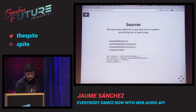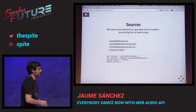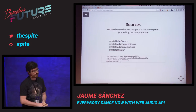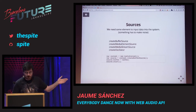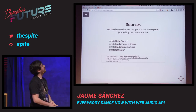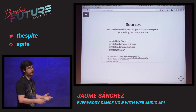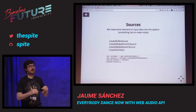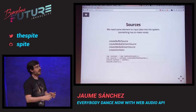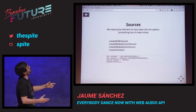Sources are our main way of putting data into the system — something has to make noise, something has to provide us with audio data. I'm going to talk about the four main ways you can put sound into Web Audio API: create buffer source, create media element source, create media stream source, and create oscillator. Once you've got your context, you create your source — in this case a buffer source, an audio buffer source node. Then you assign a buffer, which is your data to the audio buffer source node, and you start it.